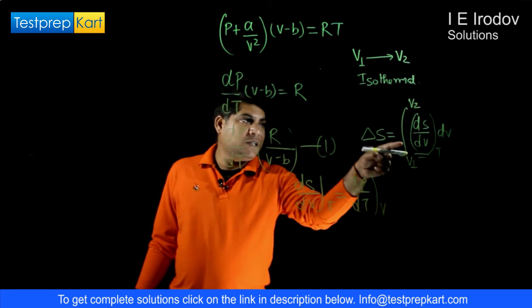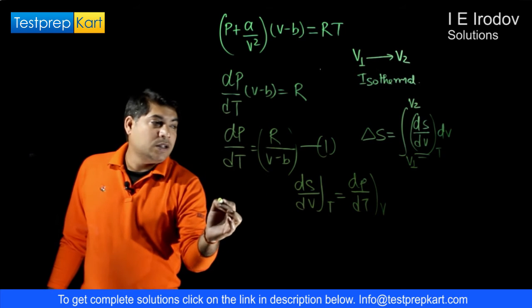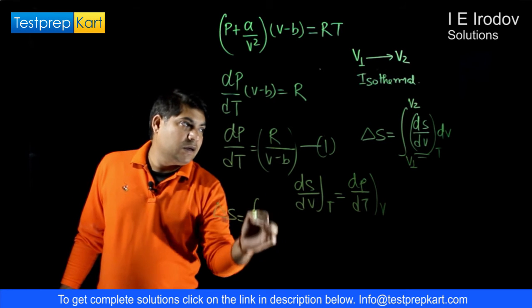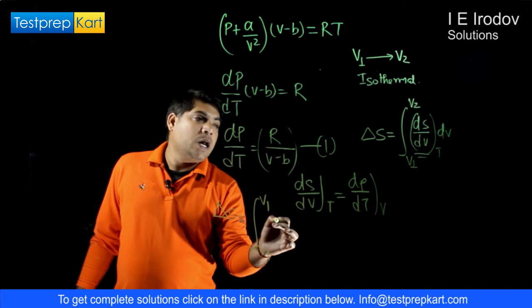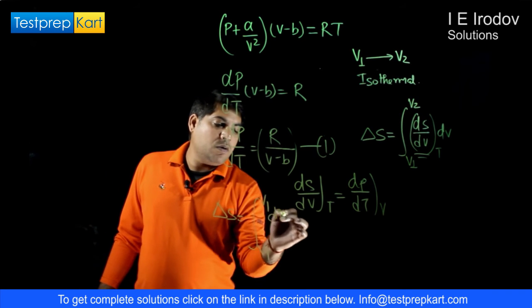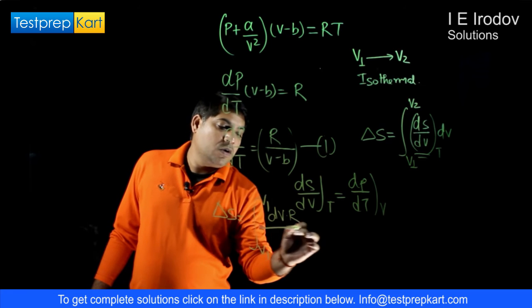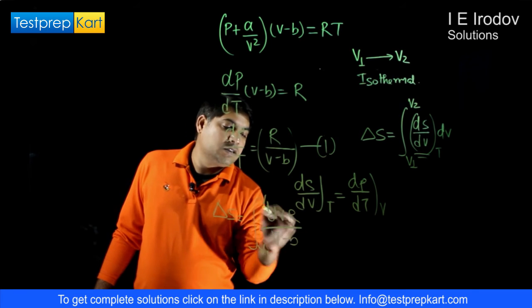Right. So we can replace this term in this expression. Then delta S equals integration from V1 to V2, dV times R/(V - b).